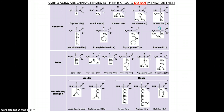There are 20 different amino acids, and the side chains give their characteristics. Some amino acids are non-polar, meaning they don't have any charge. Some are polar, meaning they have a charge — positive or negative. Some are electrically charged, like acidic or basic.